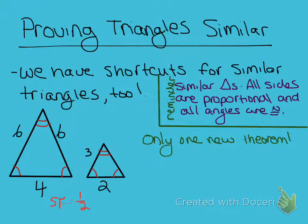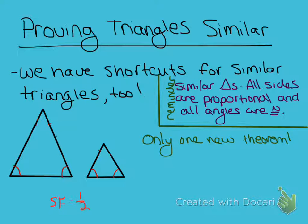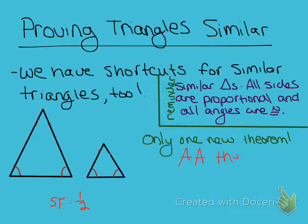I'm going to erase some of our information — I'm going to get rid of all of these side lengths, and even one of our angle measures up here. The information now given on the screen is enough to prove that two triangles are similar. You only have to know that two angles of one triangle are congruent to the two corresponding angles of the other triangle. This is the angle-angle theorem of similarity.